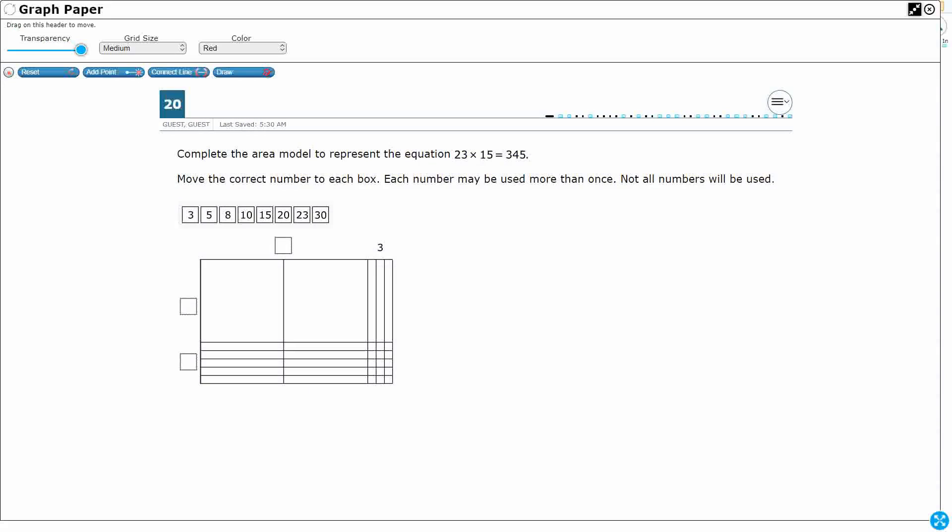So this is a two point problem. And if we want to get both points, we're going to need to get all three correct. If we only get two out of the three correct, we only get one point. And then if we get only one correct or zero correct, it's actually worth zero points.